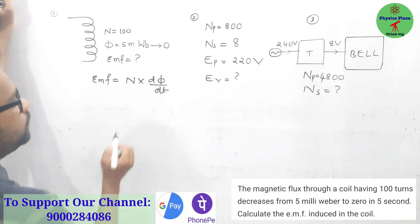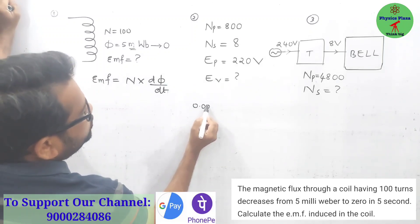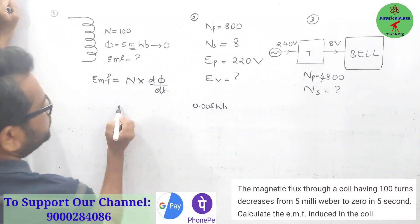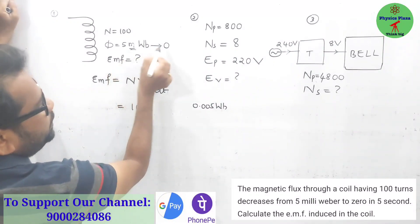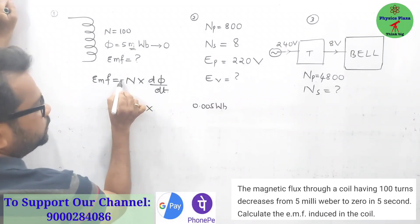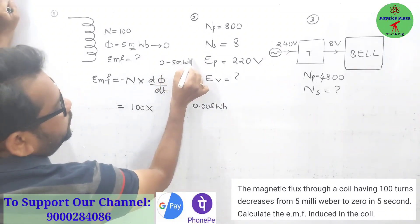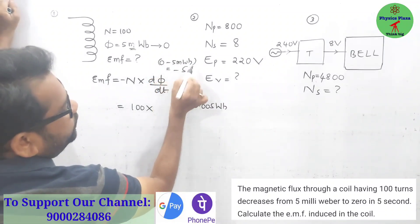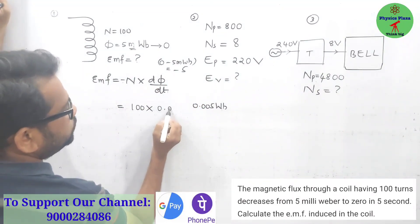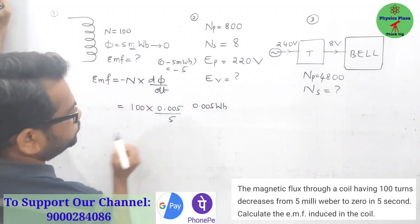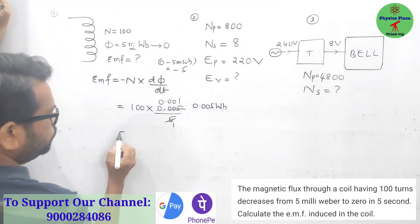Milli means 10 power minus 3, so this is going to be 0.005 weber. N is equal to 100. Change in magnetic flux: final minus initial is 0 minus 5 milliweber, which is minus 5 milliweber. So minus minus gives plus. 100 into 0.005 by 5.